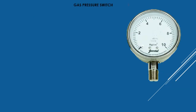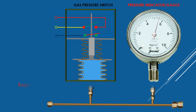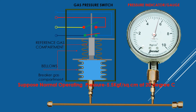Here we shall discuss about gas pressure of the circuit breaker pole whose operating pressure is 5.5 kgf per centimeter square at 20 degrees centigrade. Temperature of gas enclosed within the container plays a vital role on gas pressure. The alarm will appear at 5.5 kgf per centimeter square, and lockout will appear at 4.5 kgf per centimeter square.